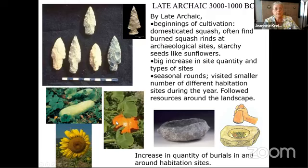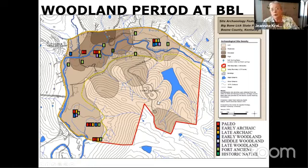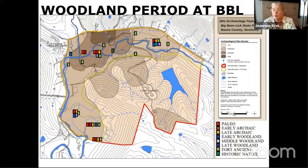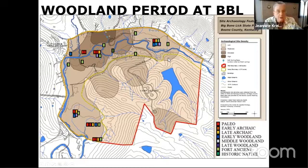The next time period is Woodland, which starts around 1,000 BC. Archaeologists note these big time period boundaries but the transition is gradual. The Woodland transition is marked by the appearance of pottery — people gathering clay and making their own pottery — and an increase in agriculture. We have Early, Middle, and Late Woodland shown on the map in bright blue, pale blue, and purple, concentrated near the entrance to the park. There is actually an Indian mound in that part of the park.